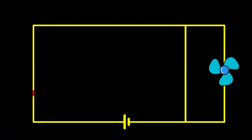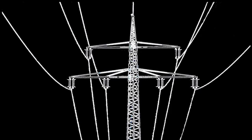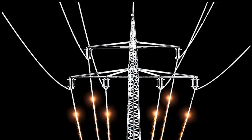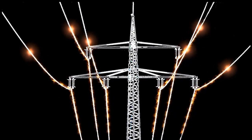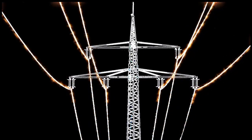In contrast, a short circuit occurs when the positive and negative terminals of a power source are connected directly, bypassing the load. This creates a low resistance path for the electrical current to flow, resulting in a large current flow which can cause damage or overheating to the circuit.